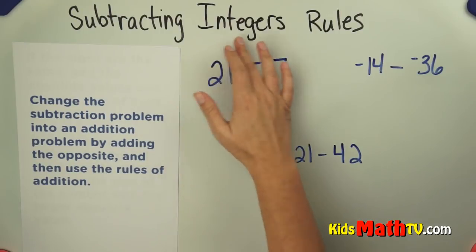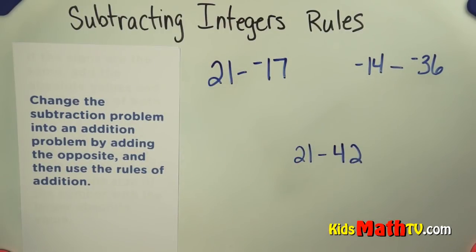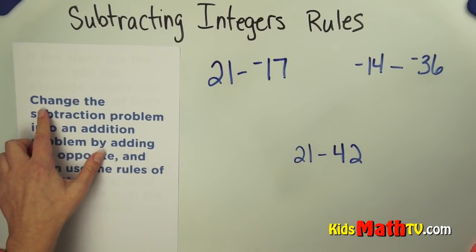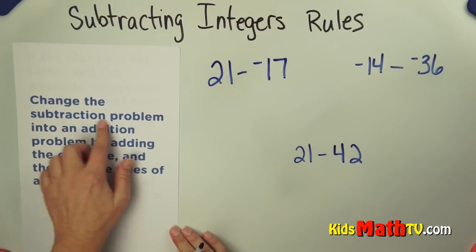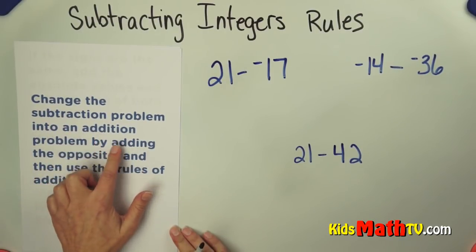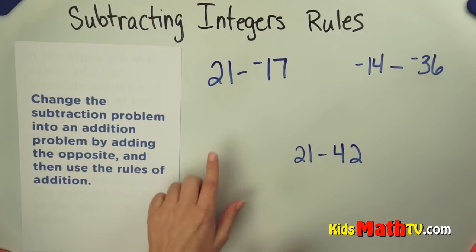In this lesson we will learn about subtracting integers using the rules. The first part of our rule is we change the subtraction problem into an addition problem by adding the opposite. Let me show you what that means.